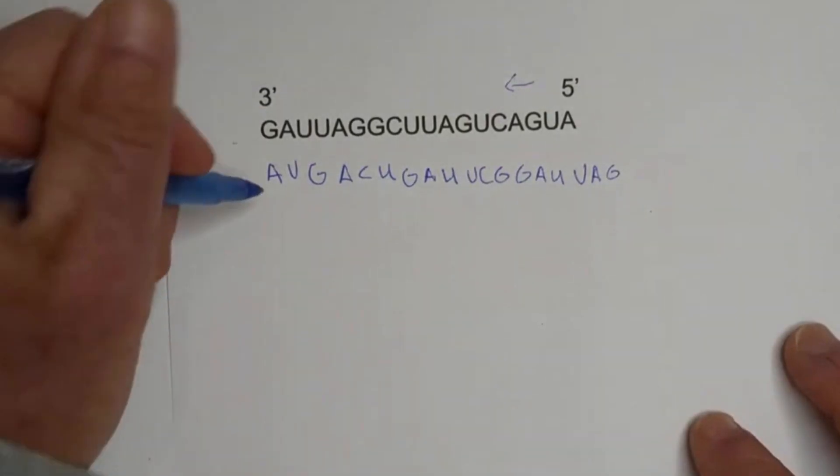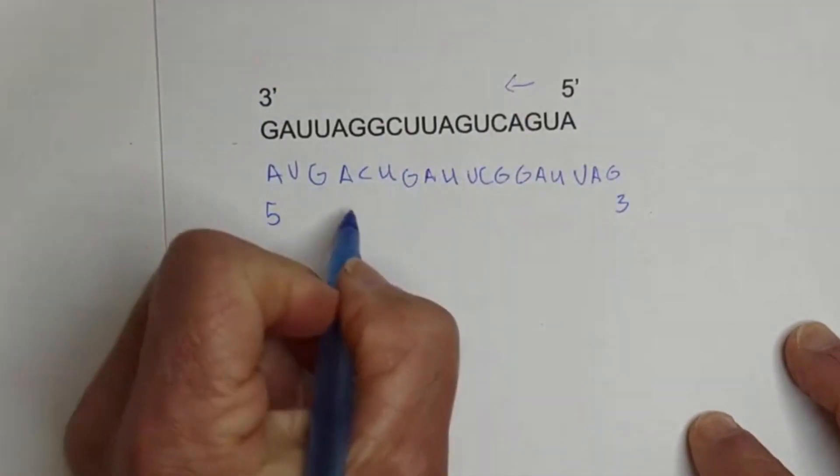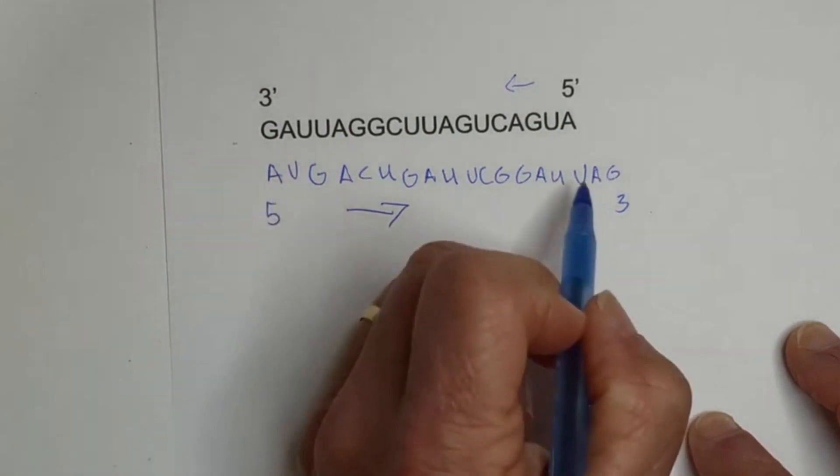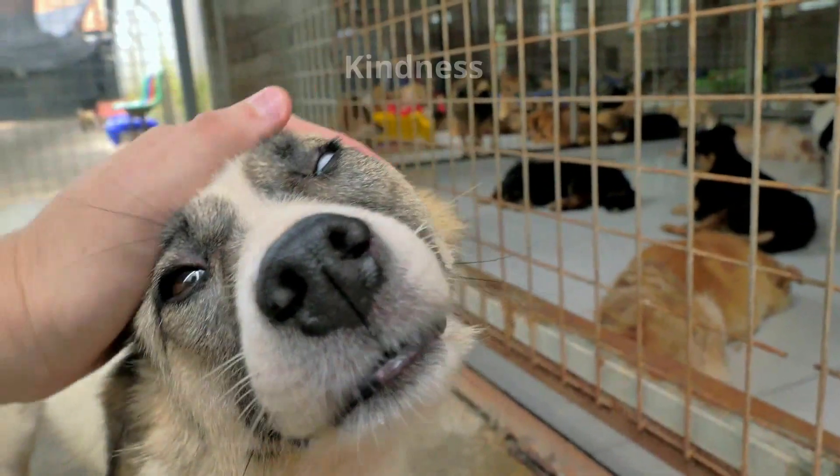And then you have it now in 5 to 3, you read in this direction. Notice you have a start AUG, and then you have a stop here. I hope that was helpful in translating from messenger RNA to the amino acid. Thank you.